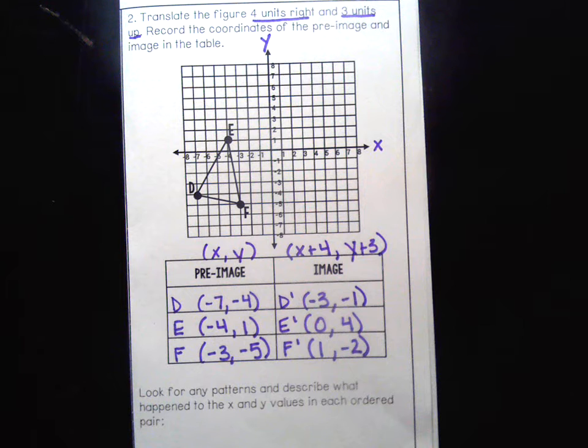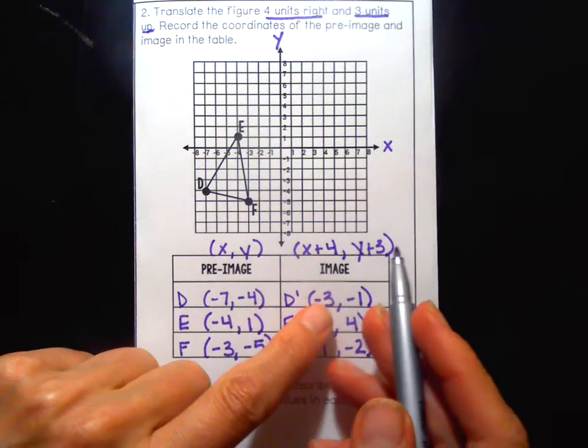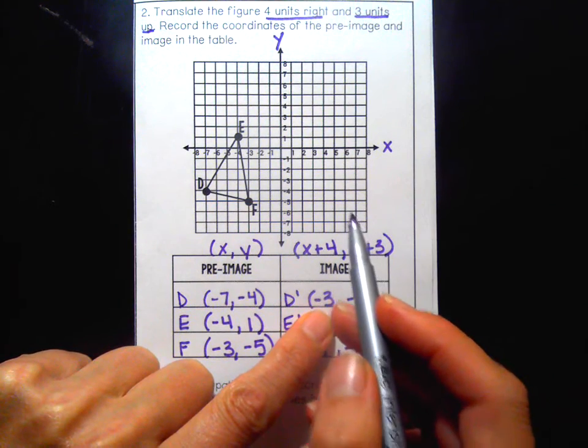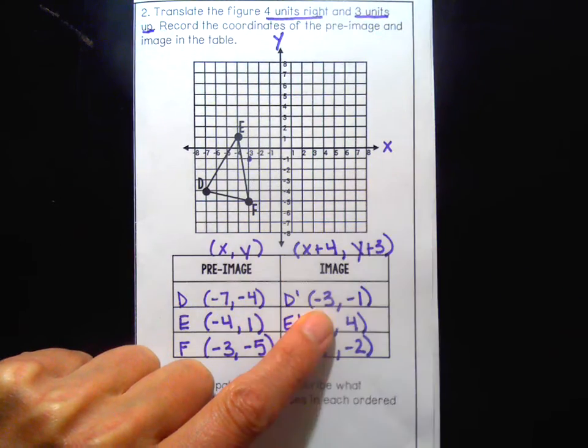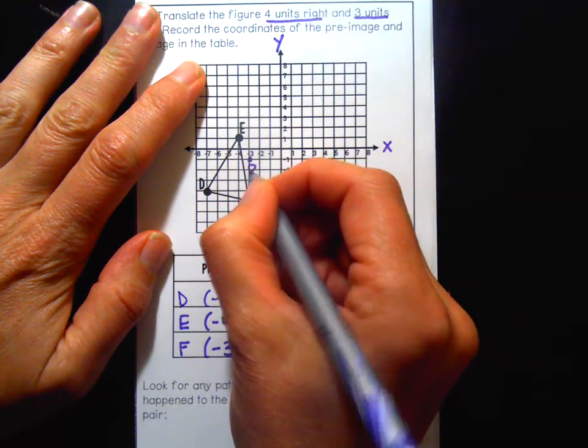I should have D prime, E prime, F prime being a congruent triangle and it's going to be over to the right and a little bit up. Let's see if when I plot my points it does. So I want to go to negative three, negative one. That's right there. That's my D prime.